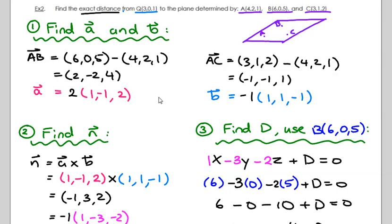What we're going to do is figure out two direction vectors on the plane using any of these points. You can combine any two points you want. I decided to find AB and AC. All you need are two direction vectors. For AB, I did position vector of B minus position vector of A; for AC, position vector of C minus position vector of A. When you subtract and simplify, you get two new direction vectors. I just care about the direction, not the scalar number.